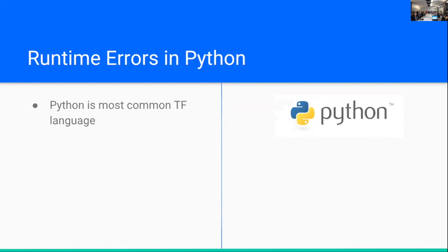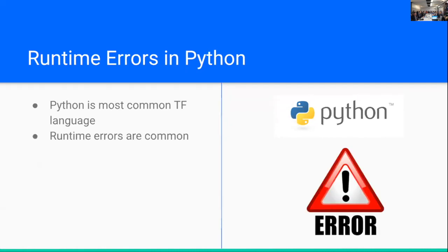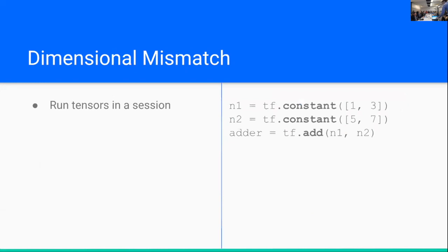So Python is the most common language that people use for TensorFlow. It's the most well-supported library. And as we know, Python is pretty prone to runtime errors. A couple examples of these that we'll go through include dimensional mismatch between different operations and missing placeholder values.